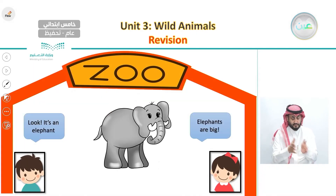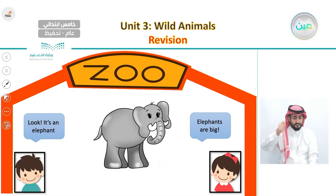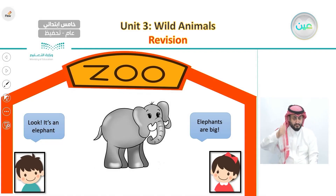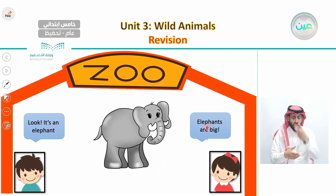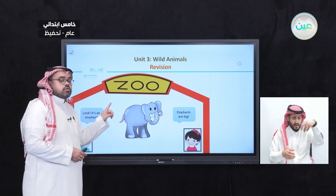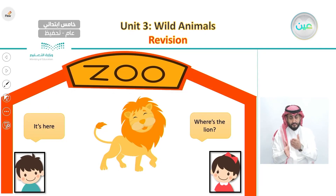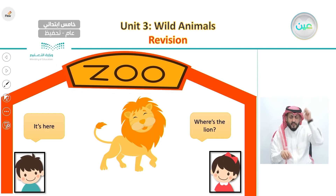They also talked about another animal where the brother pointed to an elephant and said, 'Look, it's an elephant.' The sister described it as, 'Elephants are big.' She describes the elephant as big. Also, the sister asked about the lion: 'Where is the lion?'